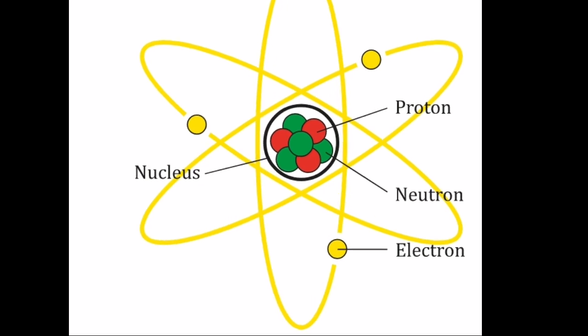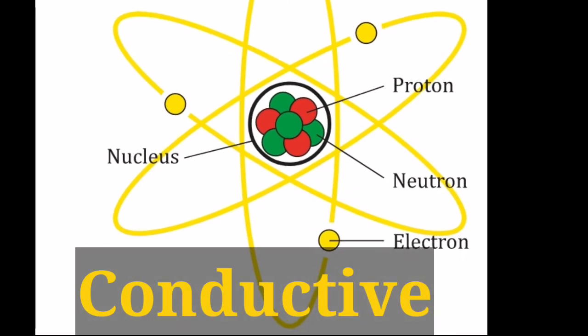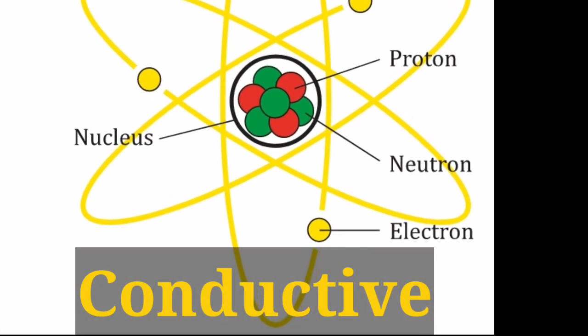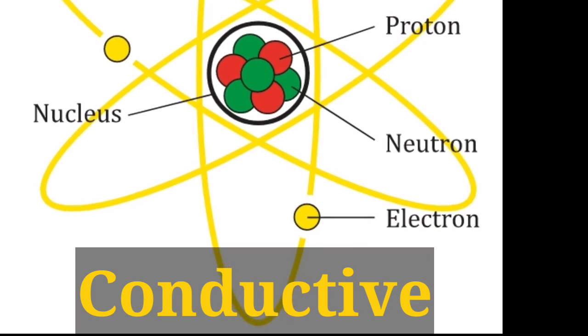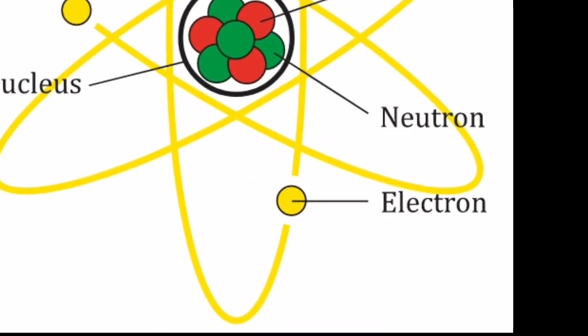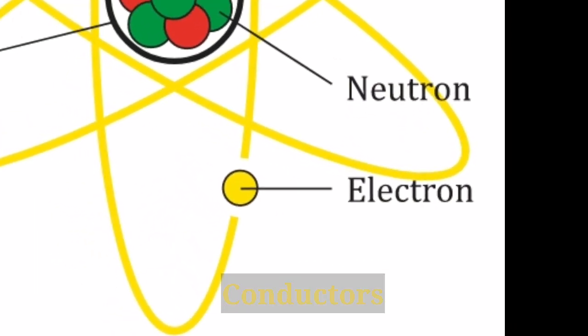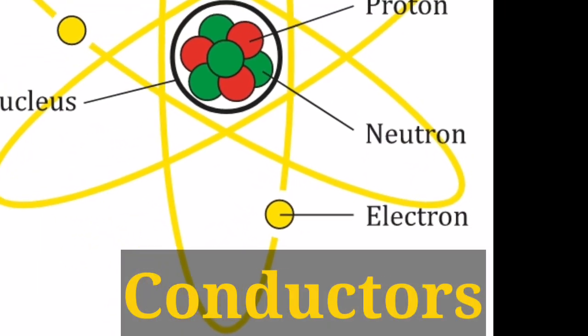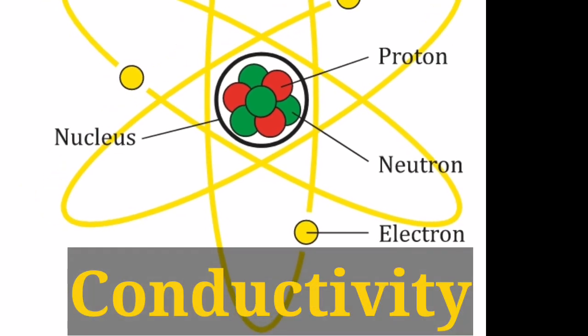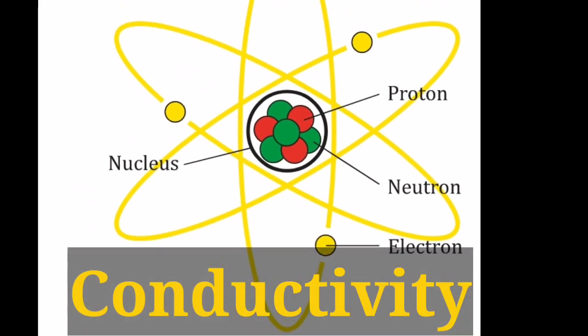Makey Makey works because we use objects that are conductive, meaning they're made up of atoms that hold their electrons loosely, allowing them to flow freely to other nearby atoms. These objects are called conductors. Conductivity is the measure of a material's ability to conduct an electric current.